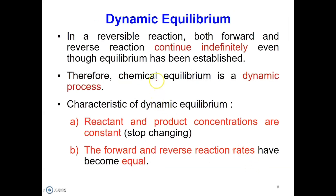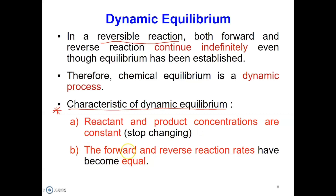In a reversible reaction, both forward and reverse reactions will continue indefinitely, even after equilibrium has been established. Therefore, chemical equilibrium is a dynamic process. There are two important characteristics of dynamic equilibrium: first, a reaction is said to achieve equilibrium when the reactant and product concentrations are constant and have stopped changing; second, equilibrium is achieved when the forward and reverse reaction rates have become equal.